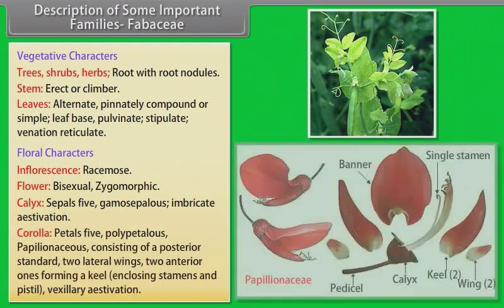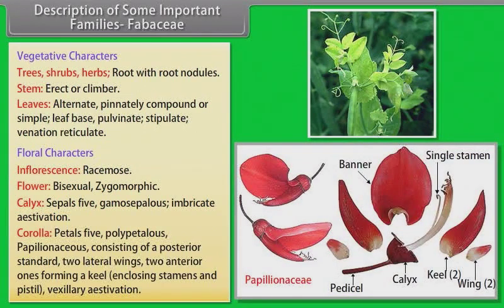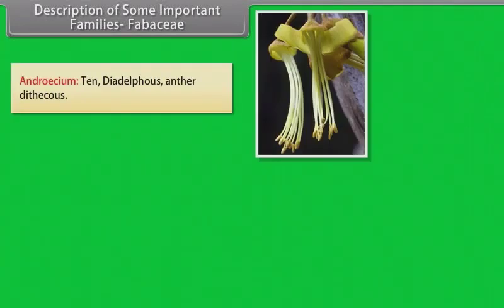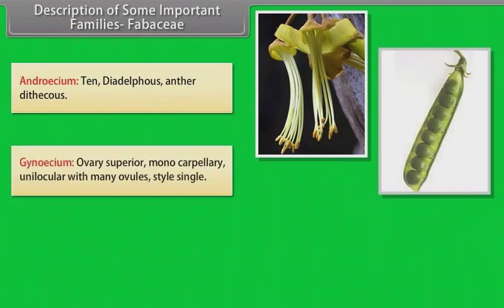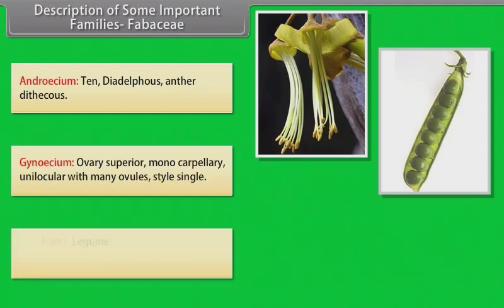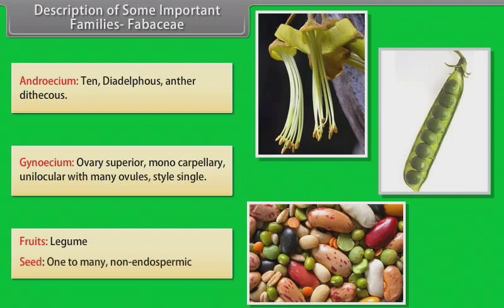Corolla: petals 5, polypetalous, papilionaceous, consisting of a posterior standard, two lateral wings, and two anterior ones forming a keel enclosing stamens and pistil; vexillary aestivation. Androecium: 10 stamens, diadelphous, dithecous. Gynoecium: ovary superior, monocarpellary, unilocular with many ovules; style single. Fruit: legume. Seed: one to many, non-endospermous.